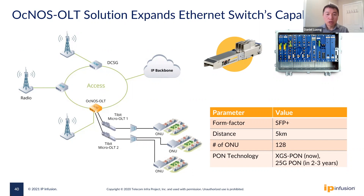Besides outdoor switches, micro block OLT can also extend the capability of indoor switches to provide low-cost PON connectivity for government office buildings or hospitals. One micro OLT can provide connectivity to up to 128 ONUs with a distance of 5km.